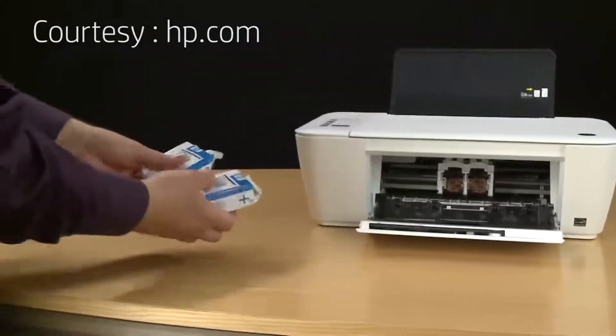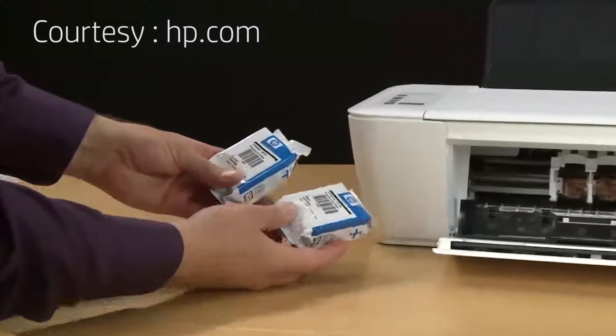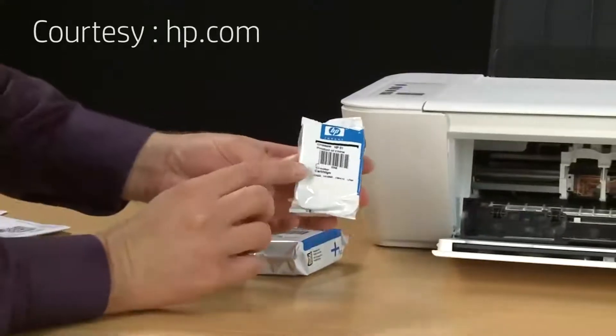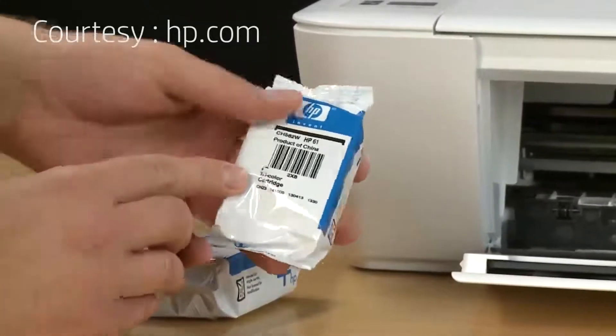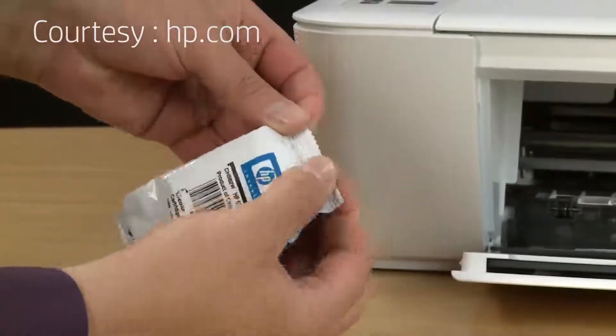Now using the cartridges that came with the printer, we'll open them up and install them. As I said earlier, the printer comes with both black and tri-color, but they're very specific in which slot you need to put them in, so we'll start with the tri-color.